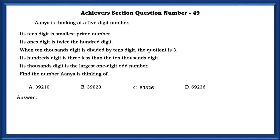Achievers section question number 49. Anya is thinking of a 5 digit number. Its 10th digit is the smallest prime number. The smallest prime number is 2. Its once digit is twice the hundredths digit. So the once digit would be 2 into hundredths.